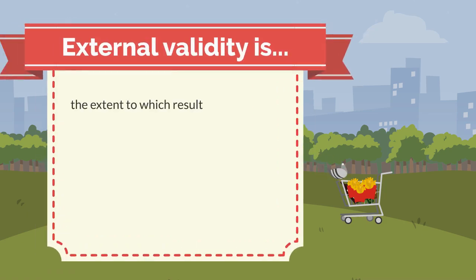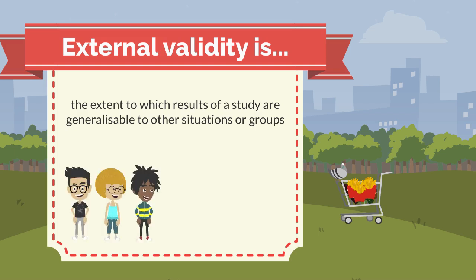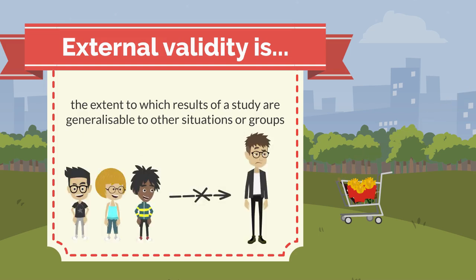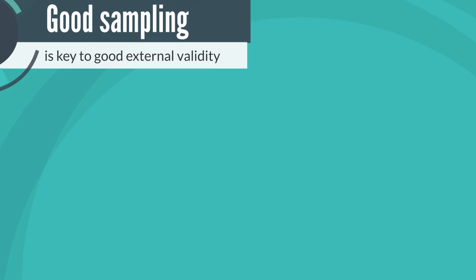External validity is the extent to which the results of a study are generalisable to other situations or groups. The love-struck lady's approach didn't go well, as her survey was conducted on a sample that was very different from the target population. Good sampling is the key to a study having wide generalisability and good external validity.